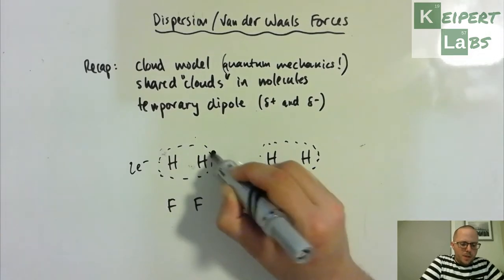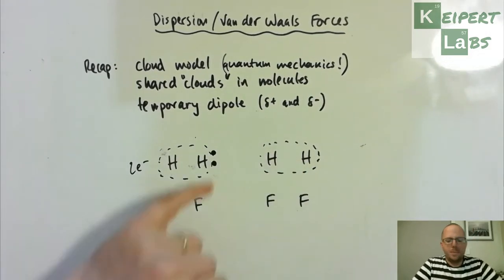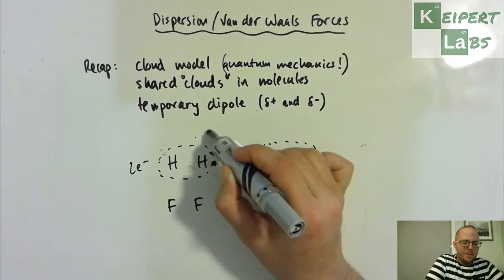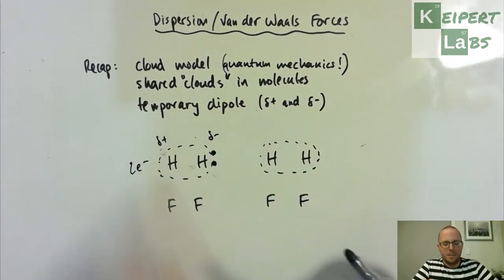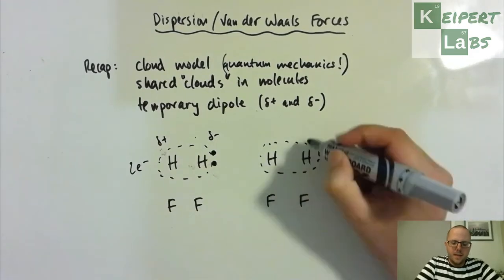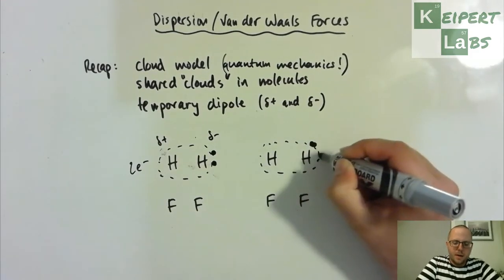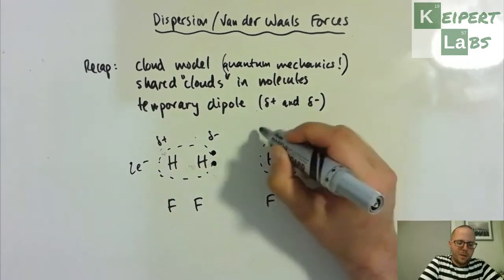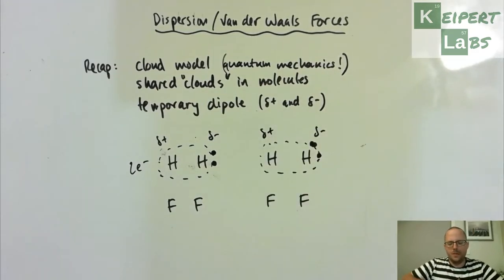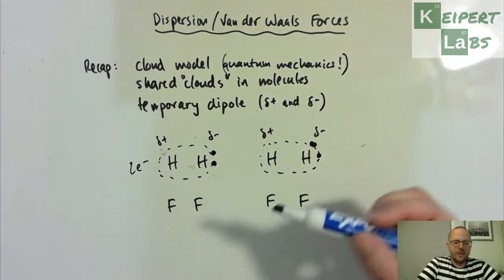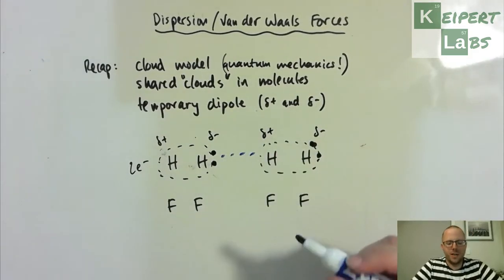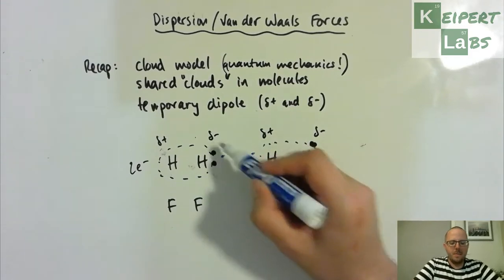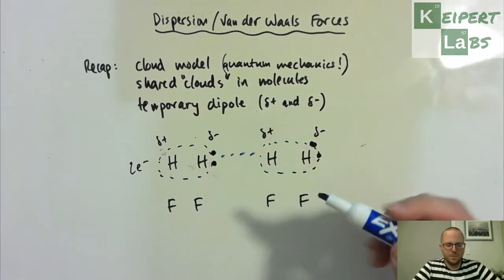Looking at the hypothetical that I raised just before, imagine that you get both electrons happening to be at one end at the same time. That means this end of the molecule is slightly negative, this is slightly positive. And then let's say hypothetically that the same thing happens to occur in this molecule as well.